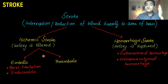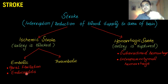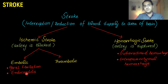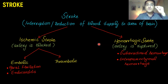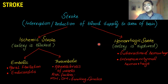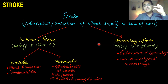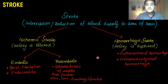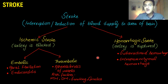Emboli can be due to atrial fibrillation or endocarditis — both conditions in which clots form in the heart and block the arteries of the brain. Thrombotic stroke results from chronic atherosclerosis, the deposition of fats within vessels. This decreases the lumen size of the vessel, reducing blood supply to the brain. Risk factors are the same as coronary artery disease: hypertension, diabetes mellitus, smoking, and genetics.